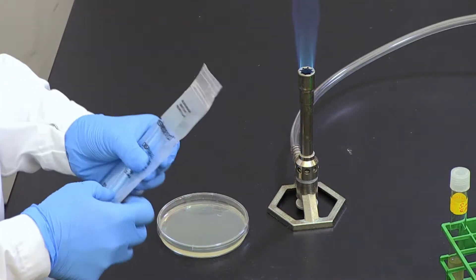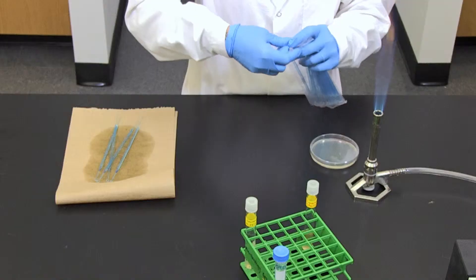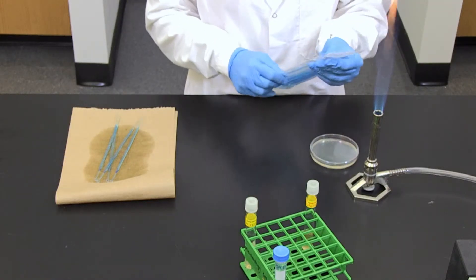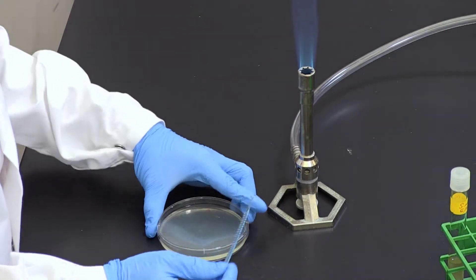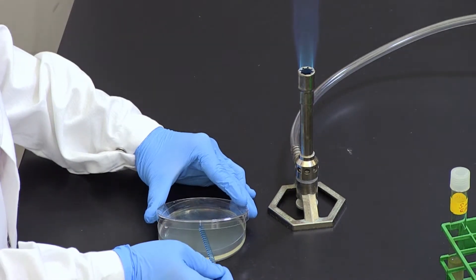Next, rotate the plate a final 90 degrees while keeping the plate closed, and streak area 4 several times back and forth with a sterile inoculating loop, hitting the third streak a few times.